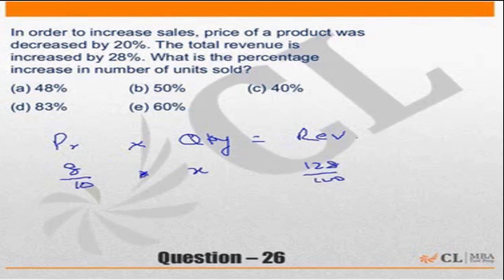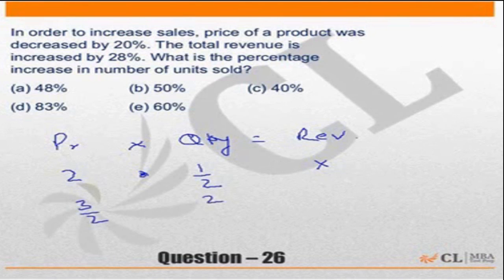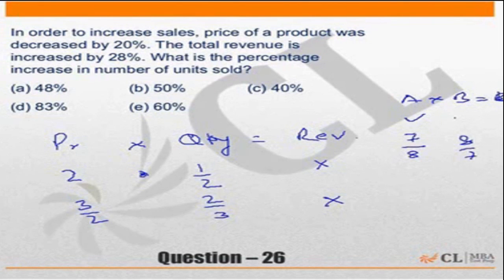An interesting aspect of these questions is that many problems say the price and quantity change but the revenue does not change. If revenue does not change and price becomes 2 times, then quantity should become half. If price becomes 3 by 2 times, quantity should become 2 by 3. So if A times B is constant, whatever A becomes, B should be the reciprocal — for example, if A becomes 7 by 8, then B should become 8 by 7.